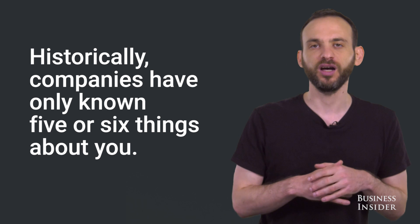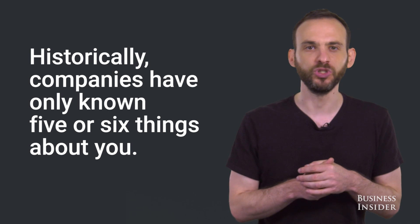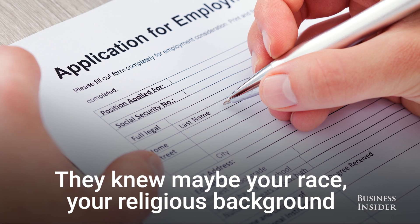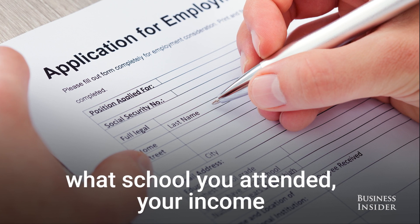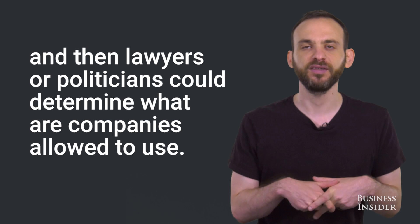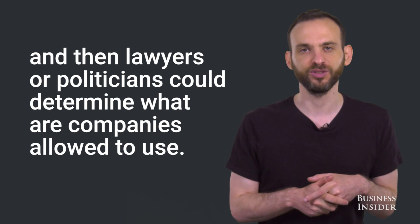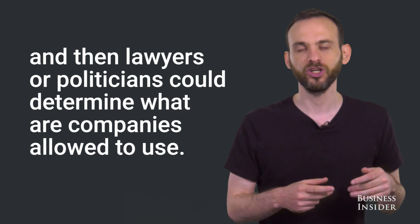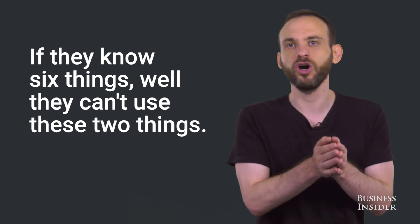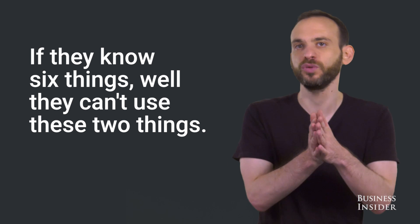Historically companies have only known five or six things about you. They knew maybe your race, your religious background, what school you attended, your income, your previous employment history, and then lawyers or politicians could determine what companies are allowed to use. If they know six things, well they can't use these two things.